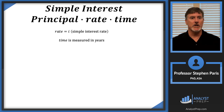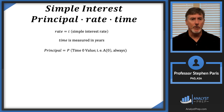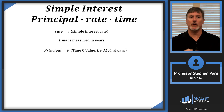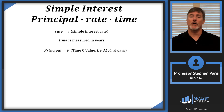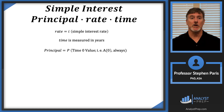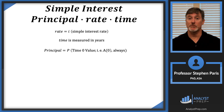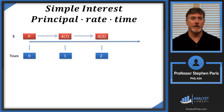Time is always measured in years. Also, once you're told you're using simple interest, the principal is going to be denoted with a capital P, and it's always going to be the time-zero value, or the A(0) value. This is the amount function notation we used in the previous video — the A(0) value, the amount at time zero, is just what you put in at time zero. So let's look at a timeline over a two-year period.